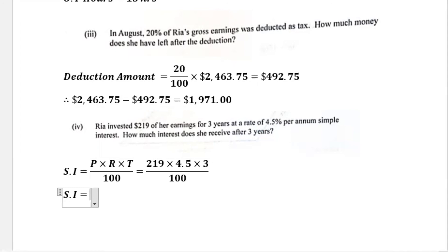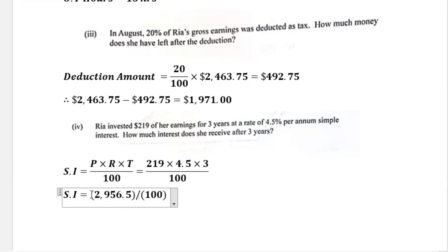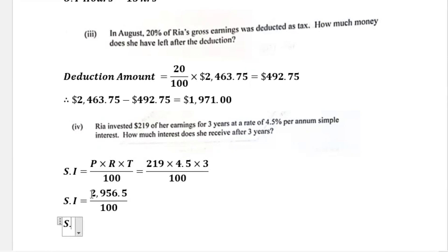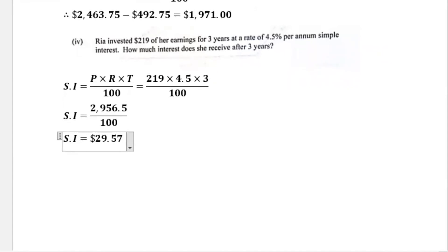Working the numerator: 219 multiplied by 4.5 multiplied by 3 gives 2,956.5. Dividing by 100 gives 29.565, which we write to two decimal places as $29.57. Therefore the simple interest received after three years is $29.57. Thank you for joining us for part one and we'll see you again in part two.